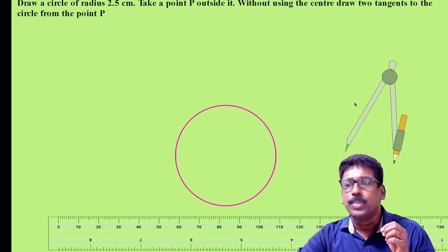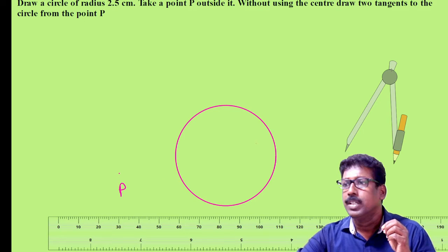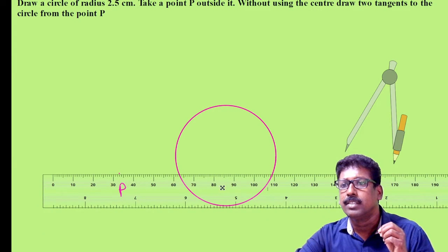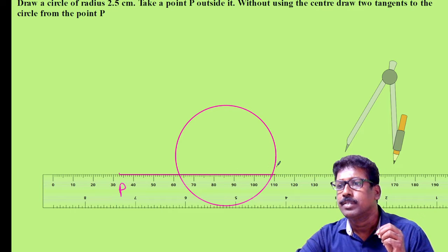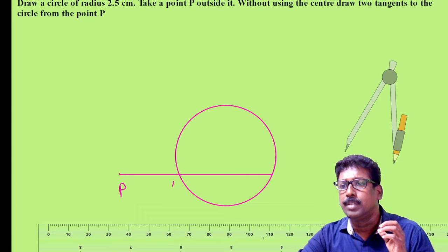Now take a point P outside the circle. Let this be point P. Now what you have to do is draw a secant through P. That is a secant — let PAB be a secant.